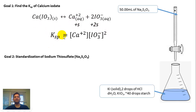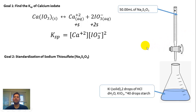The squared comes from the 2 here. So the first goal is to calculate Ksp. The second goal is to standardize sodium thiosulfate. In all of these experiments, you're going to do a series of titrations — up to 4 titrations, each done twice. At the burette, you're going to put about 50 mL of Na2S2O3, which is sodium thiosulfate.